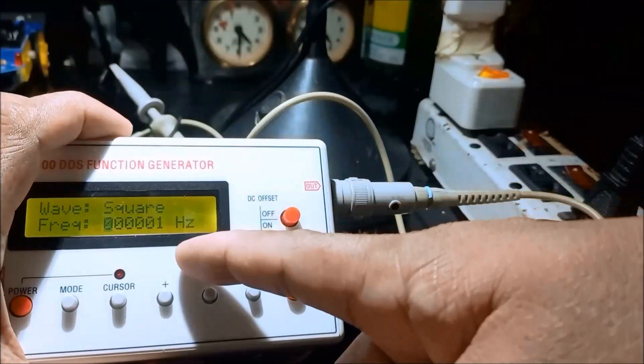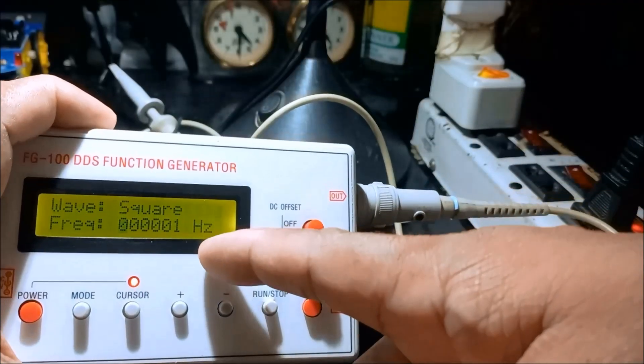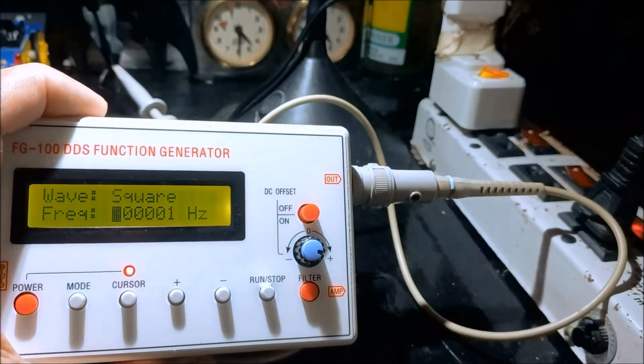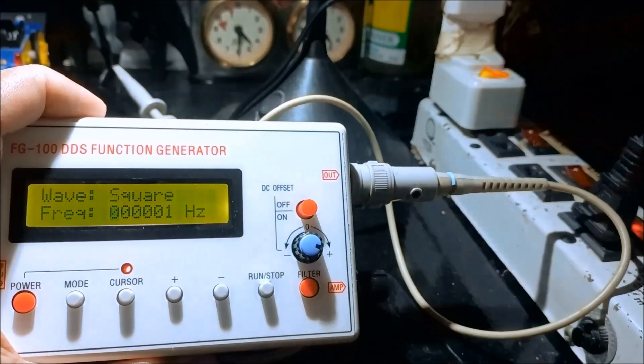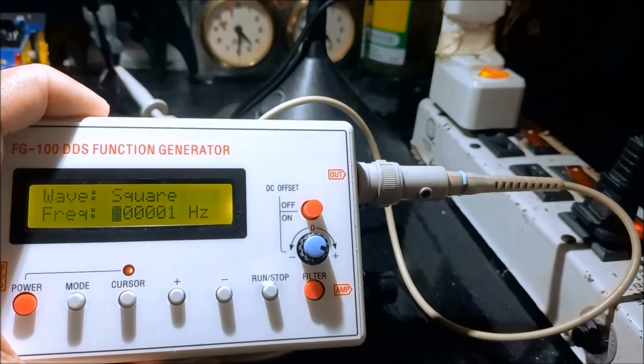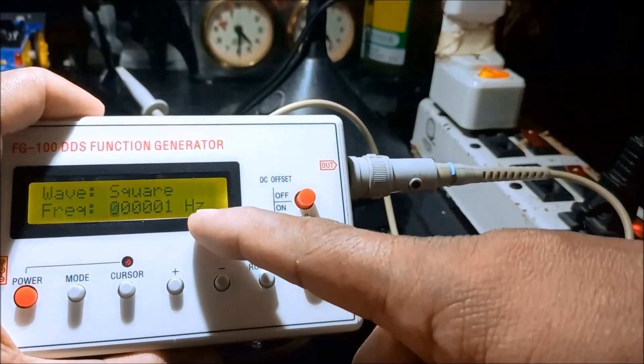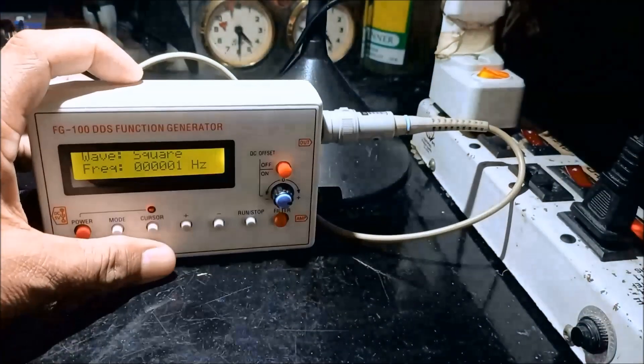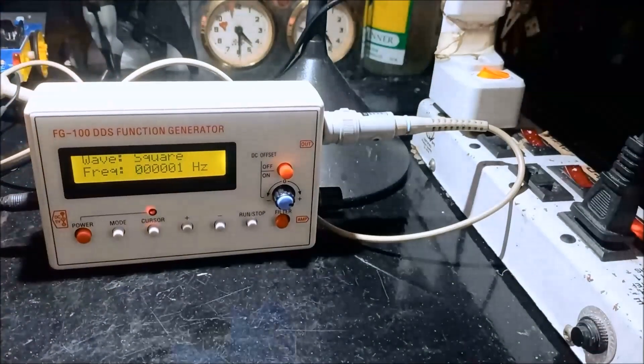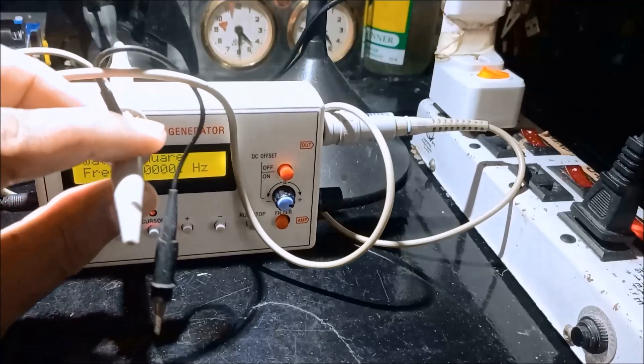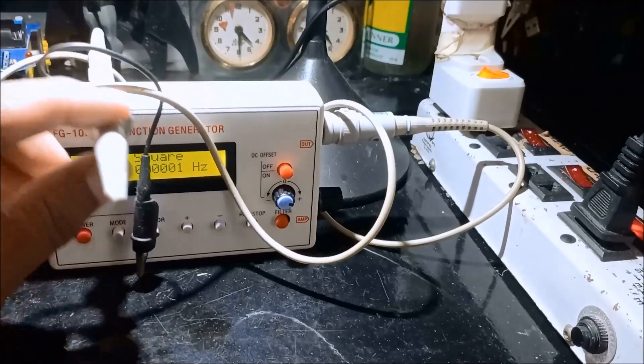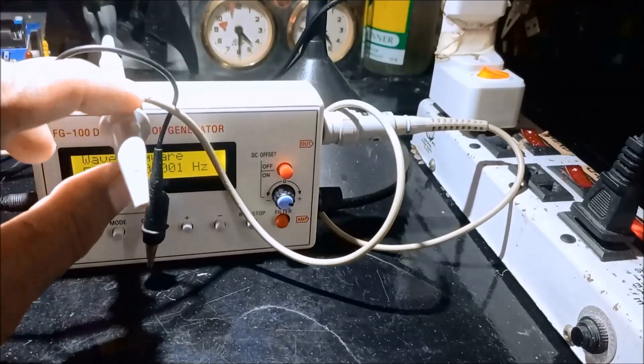We can see the 1 hertz square wave which we could not see unless we are using an oscilloscope. 1 hertz. Let us have what is the output of this square wave.